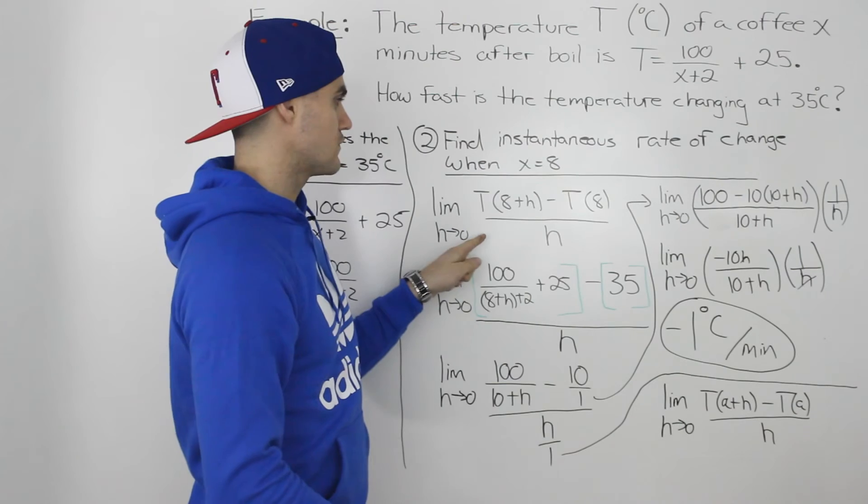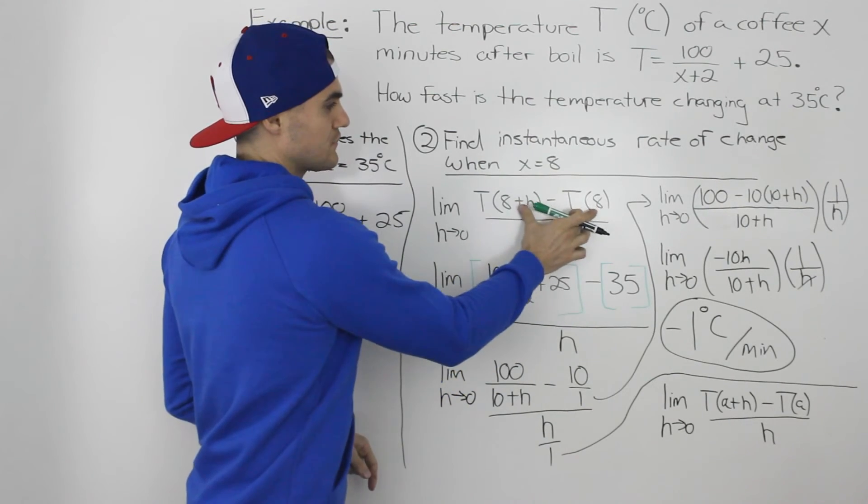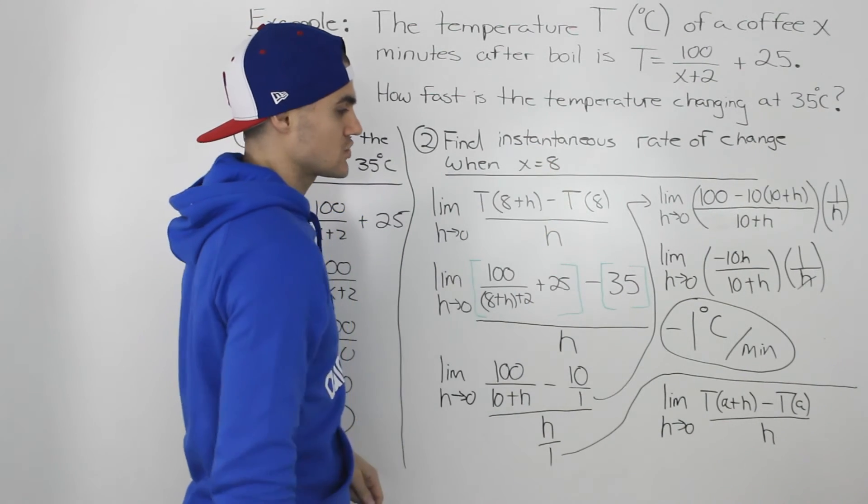Now, if you notice, when we found the rate of change, we found it by picking a specific a value of 8 because that's when we had to find the instantaneous rate of change for.